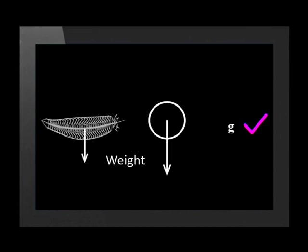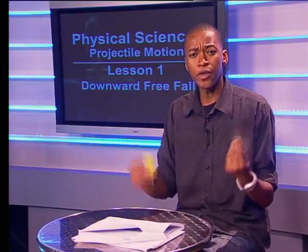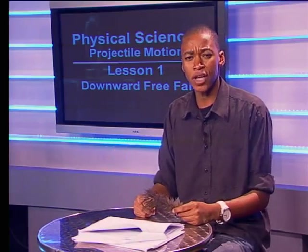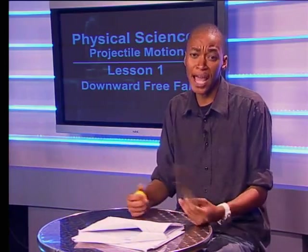Each would be in free fall, each would accelerate at the acceleration due to gravity g — 9.8 meters per second squared downward. Then the feather and the ball would fall exactly together. That's amazing, and it might be difficult to believe without seeing it — so let's watch.